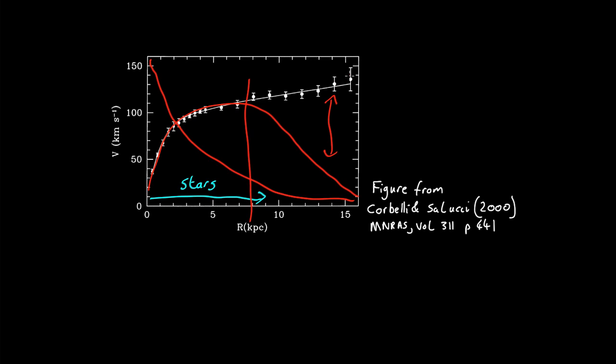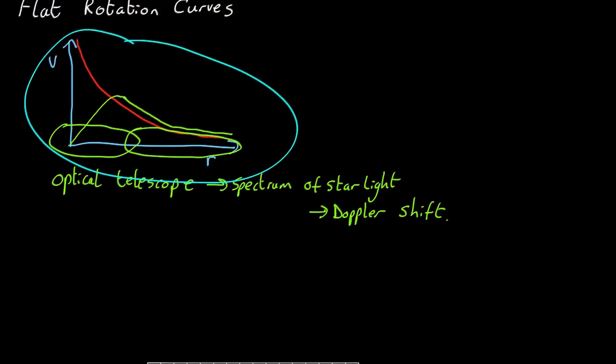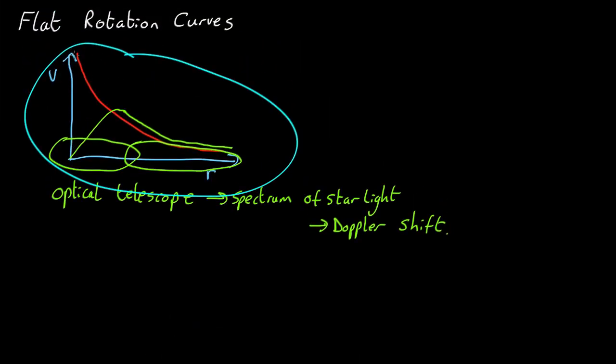So it doesn't match any of the predictions. It doesn't come down like this. It doesn't go up and down like that. Instead, it goes up and then stays up, or even climbs slightly, far, far out beyond where stars are happening.